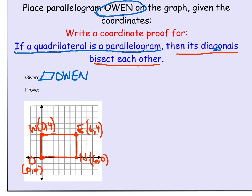Your picture should look like this, with the points O, W, E, N. What we're trying to prove is that the diagonals bisect each other. So I'm going to draw the diagonals from O to E and from W to N. Those two segments intersect at a point, and we're going to give it a name — let's call it X.